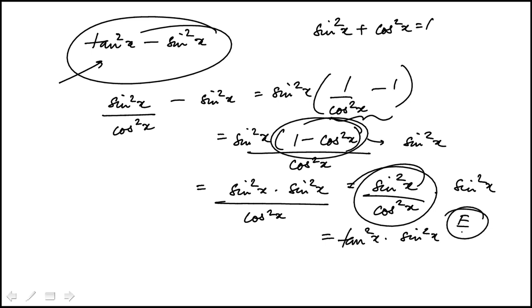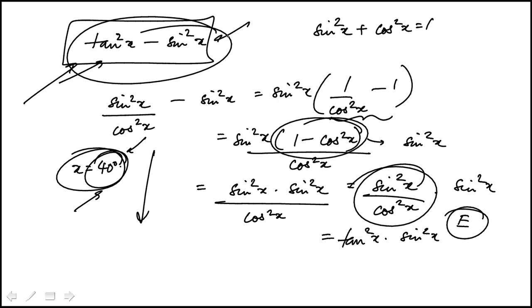Now there's one other method, if you can't do any of these manipulations, is to pick a value for x. I'll probably pick, say, 40 degrees. Compute this, and then plug in x equal to 40, and do it in degrees. Make sure all the answer choices match with that result you got for this expression. That would be the other way to do it.